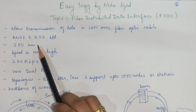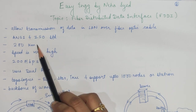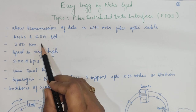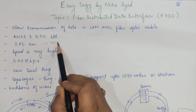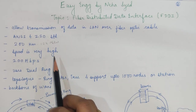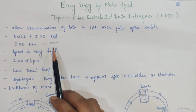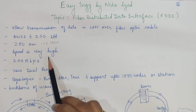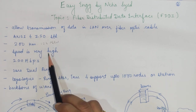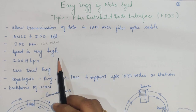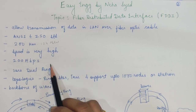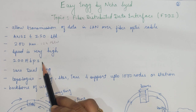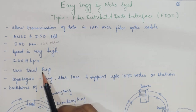FDDI can be used where the LAN can be extended up to 200 kilometers or 124 miles in diameter. As fiber optic cables are used here, obviously the transmission rate is going to be very high, and it supports a data transmission rate of up to 200 Mbps.